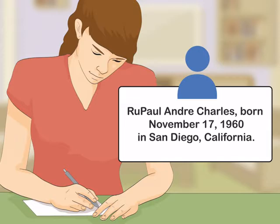For example, you may write: RuPaul Andre Charles, born November 17, 1960 in San Diego, California.